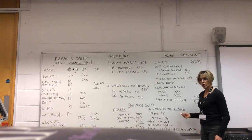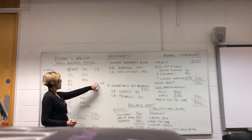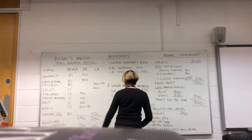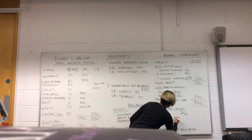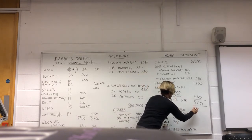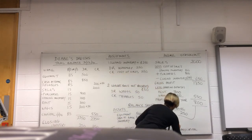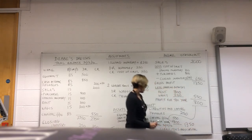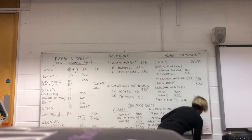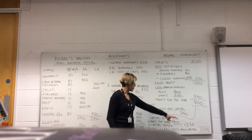Now let's look at the liabilities. We've got payables — straight from the trial balance with the adjustment — £200 plus £50, giving £250. And we've got capital: our opening capital from the trial balance of £550, plus the profit for the year of £800. That profit figure goes down into the balance sheet, giving us closing capital at the end of the year of £1,350. Plus the £250 liabilities, so we've got total liabilities and capital of £1,600.